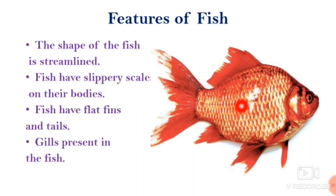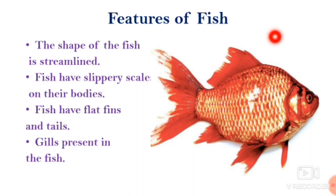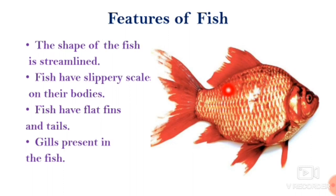Fish have flat fins and a tail. Observe here — these are the fins and this is the tail. They help them to change direction and keep their body balance in water. Gills are also present in fish, which help them to use oxygen dissolved in water.